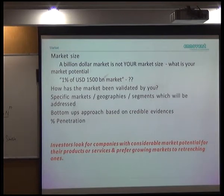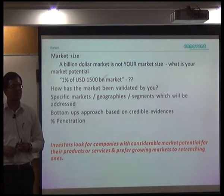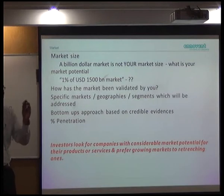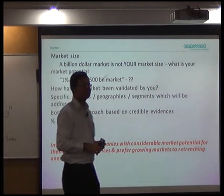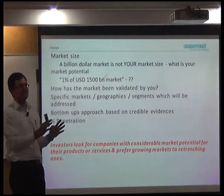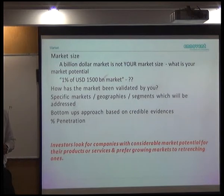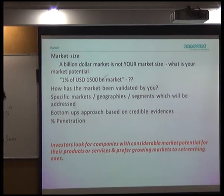Investors look for companies with considerable market potential. MakeMyTrip is online and not restricted to a particular region — but when it started, it actually focused on the US NRI market: people who wanted to come back to India. That was the first target geography. By 2006-2007, when they realized India was waking up to online transactions, they started expanding the market to India. It was not from day one. Even in an internet company, you have to be very careful about what your market potential is and what your target market is.